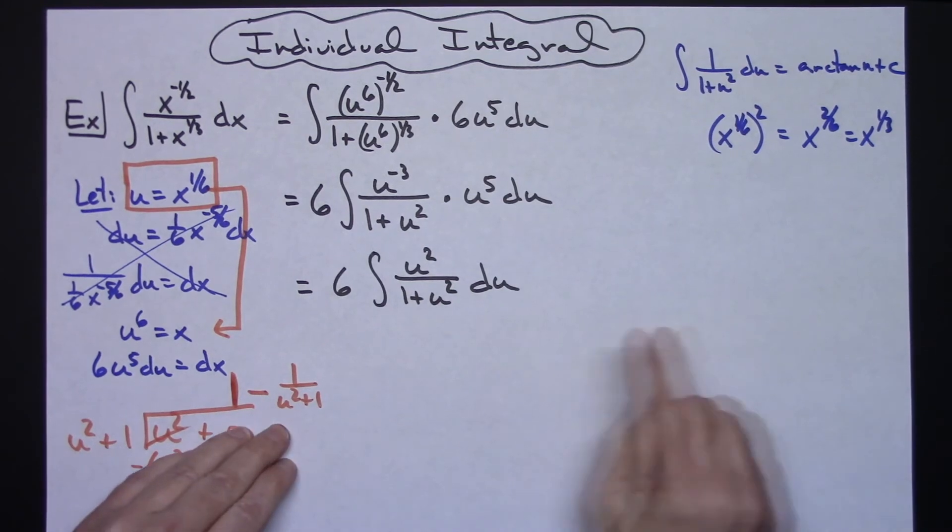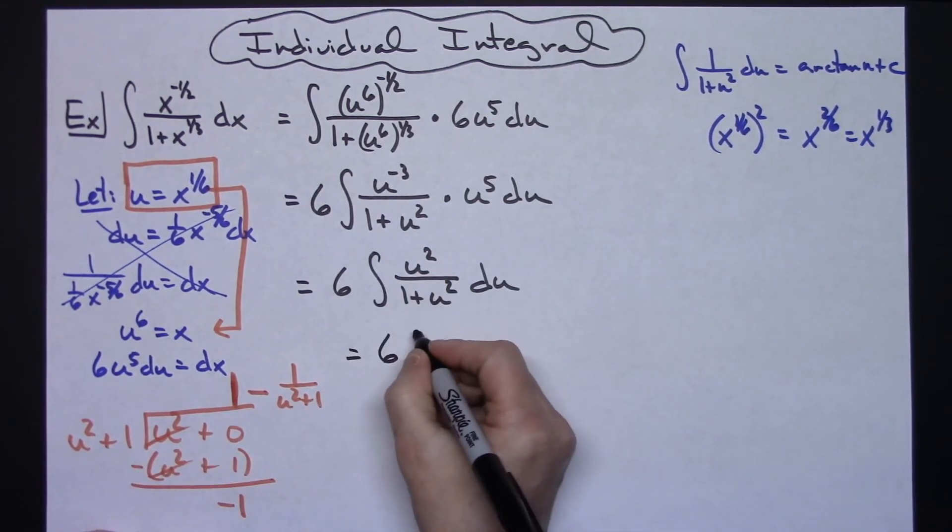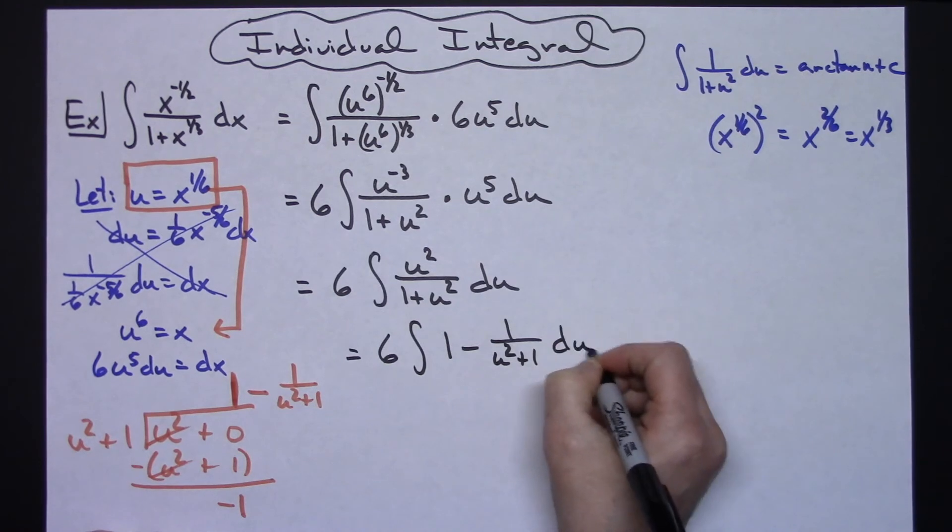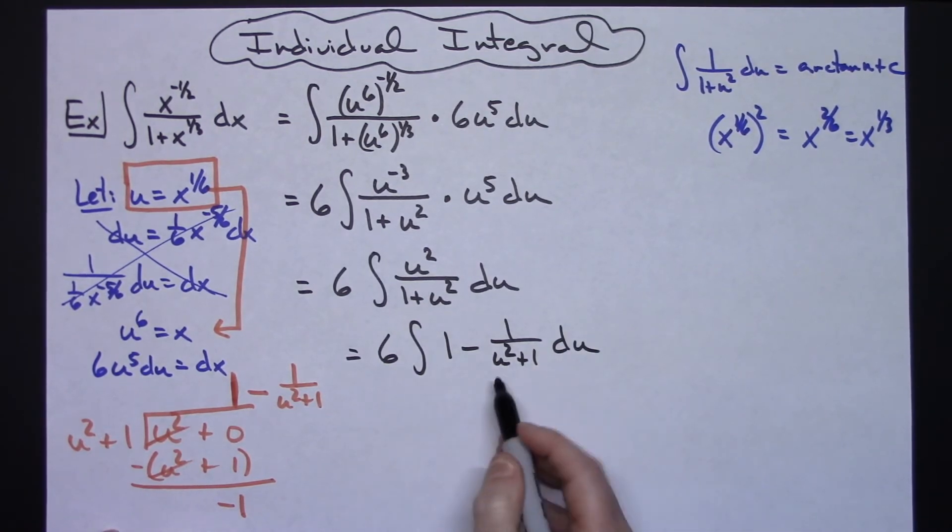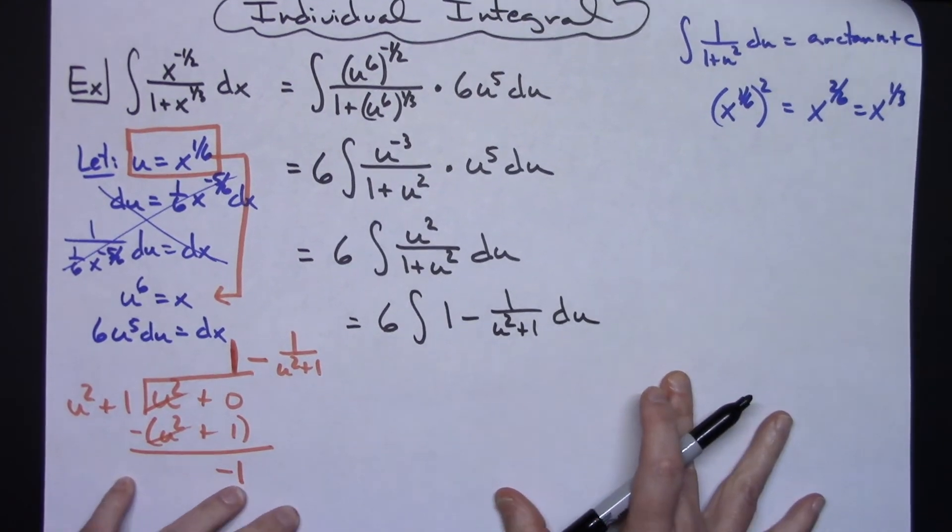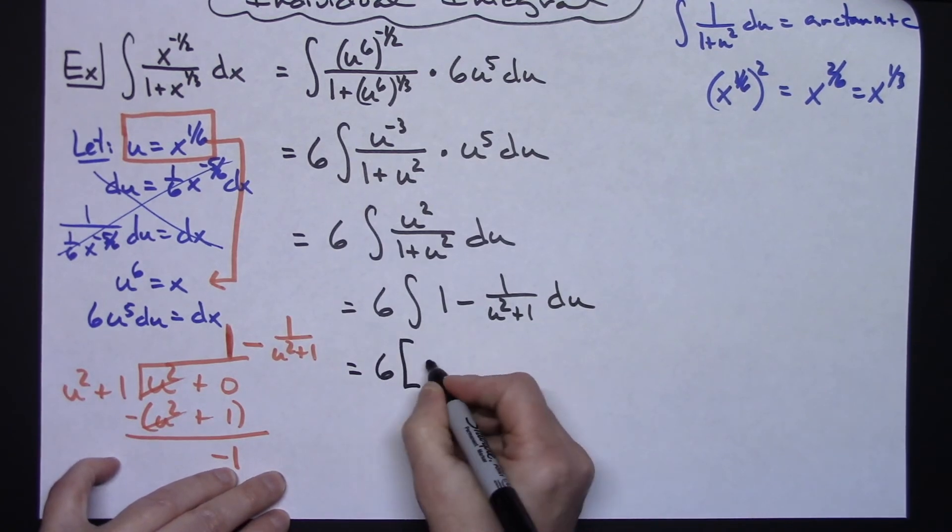So there comes that integral that we already know. So then taking this expression and replacing here, I'm going to have a 6 times the integral of 1 minus 1 over u squared plus 1 du. And then I can integrate each of these individually now.